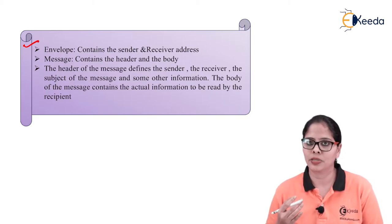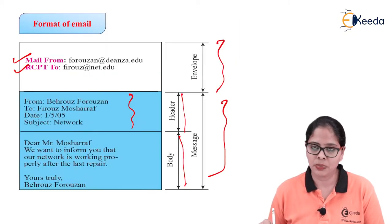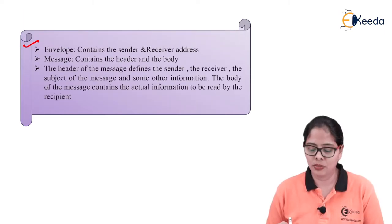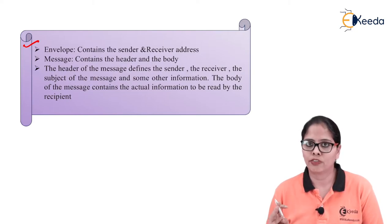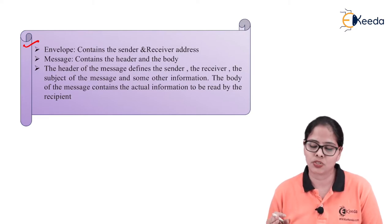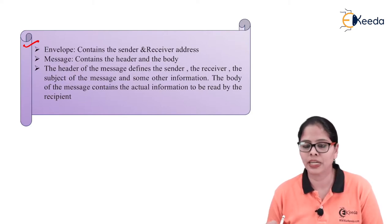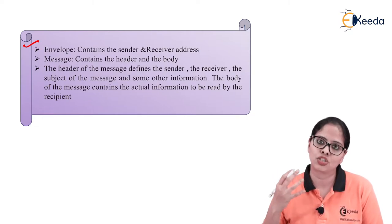There are two parts in the message: the first part is the header and the second is the body. A header defines the sender and receiver, the subject of the message, and some other information. Whenever you are writing the email, you put the sender address, receiver address, and you can add the subject. The body of the message contains the actual information to be read by the recipient.